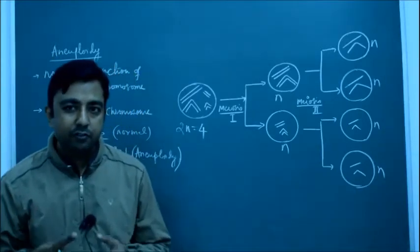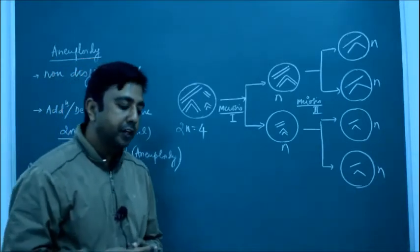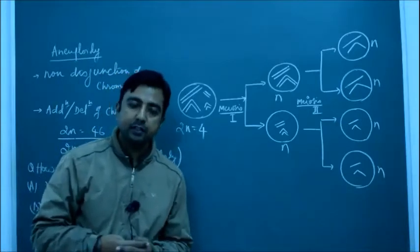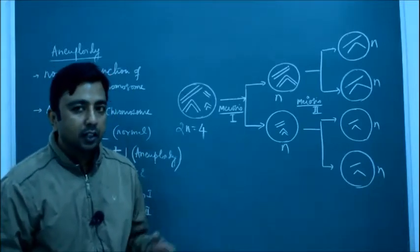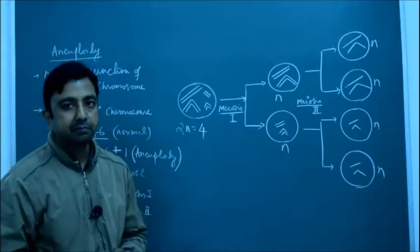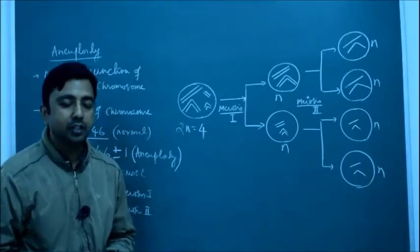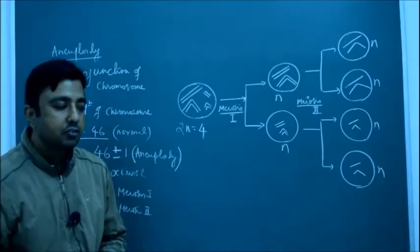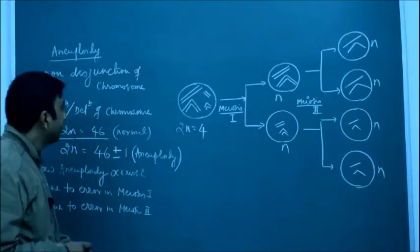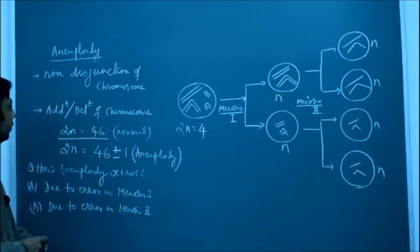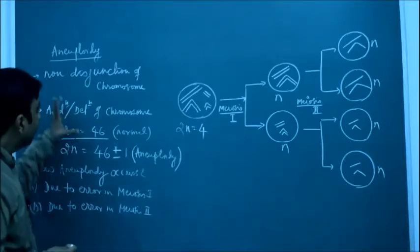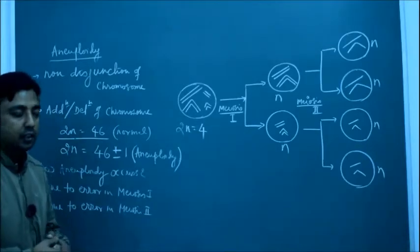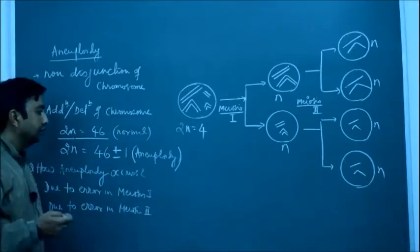Today we are going to discuss a very fresh topic — aneuploidy. This topic is very important from the examination point of view because in many competitive examinations, questions are asked directly from this topic. If you know the concept, you can easily answer the questions with confidence. So let's get started. Aneuploidy occurs due to non-disjunction of chromosomes, or due to addition or deletion of a chromosome.